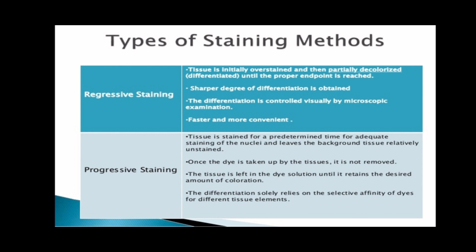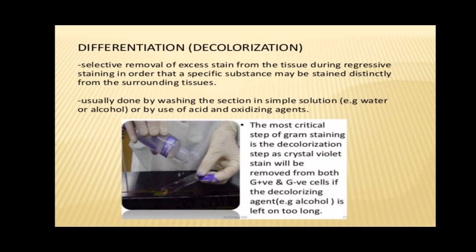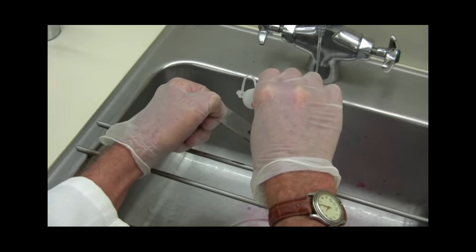With regressive staining, the tissue is first overstained to obliterate cellular details, and the excess stain is removed or decolorized from unwanted parts of the tissue until the desired intensity of color is obtained. Differentiation or decolorization is the selective removal of excess stain from the tissue during regressive staining so that a specific substance may be stained distinctly from surrounding tissues. This is usually done by washing the section in water or alcohol, or by the use of acids and oxidizing agents.